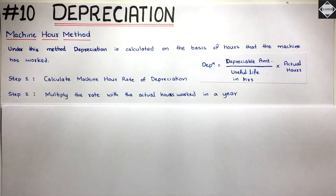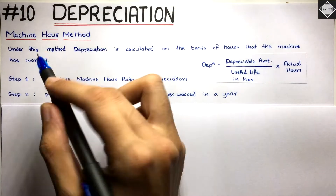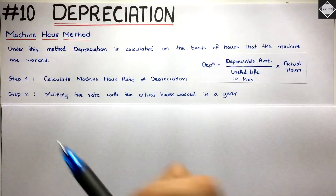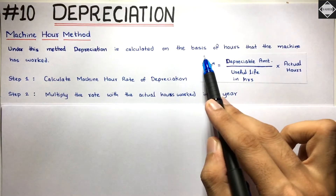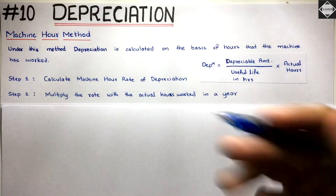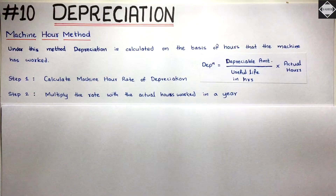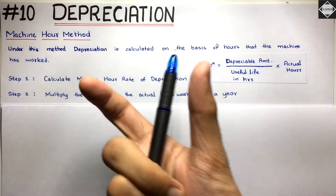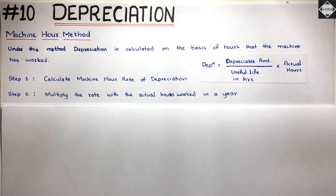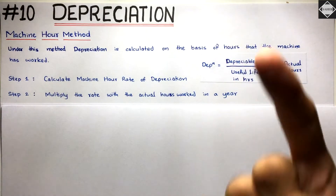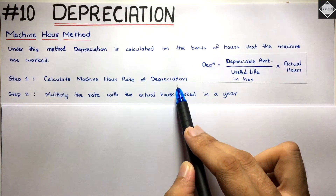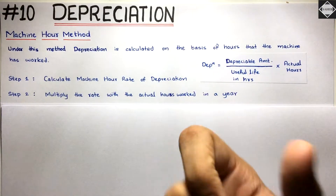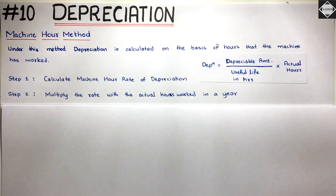It's just the calculation that is different. This method is based upon hours, so the calculation is also based on hours. Depreciation is calculated on the basis of how many hours the machine has worked in a year. When we purchase the machine, we estimate the total hours — the useful life in form of hours. Then at year end, we calculate the depreciation. The first step is to calculate the Machine Hour Rate of depreciation — the depreciation per machine hour.